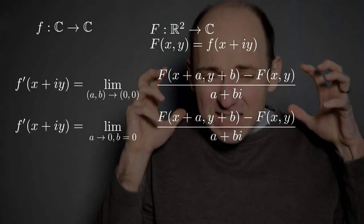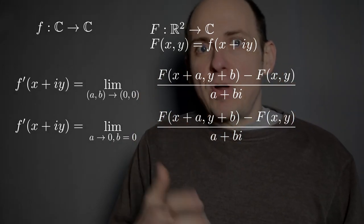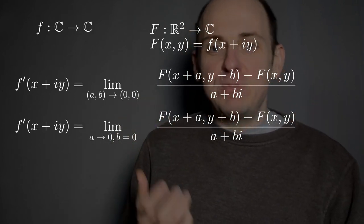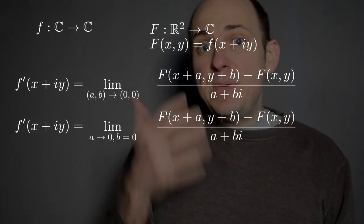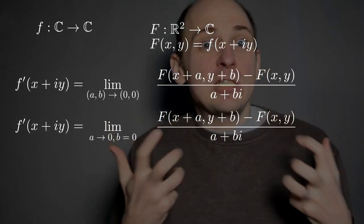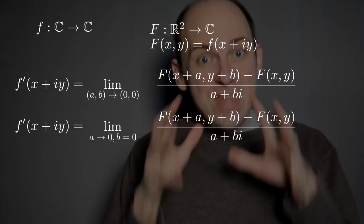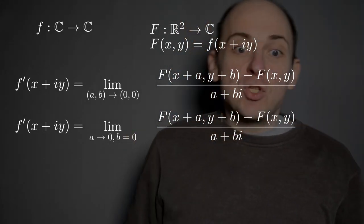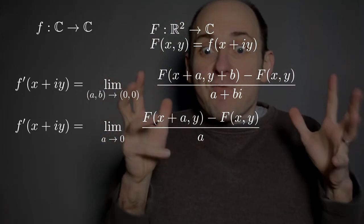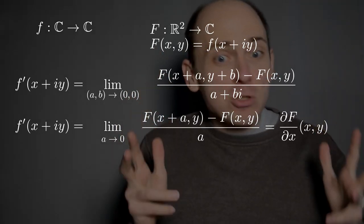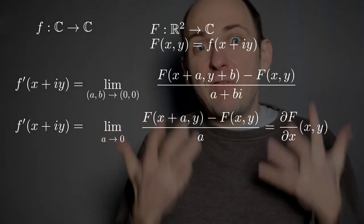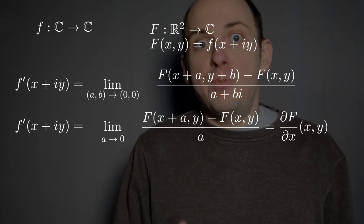Importantly, this restricted limit is not the same as the full two-variable limit — there is a huge difference between these two limits. But if the limit as (a, b) approaches (0, 0) exists, then this restricted limit where I set b equal to zero and just look at a approaching zero also exists and equals the same quantity. So I replace b by zero, simplify the difference quotient, and I recognize what I've written as just the definition of the partial derivative of big F with respect to x — the partial derivative with respect to its first input.